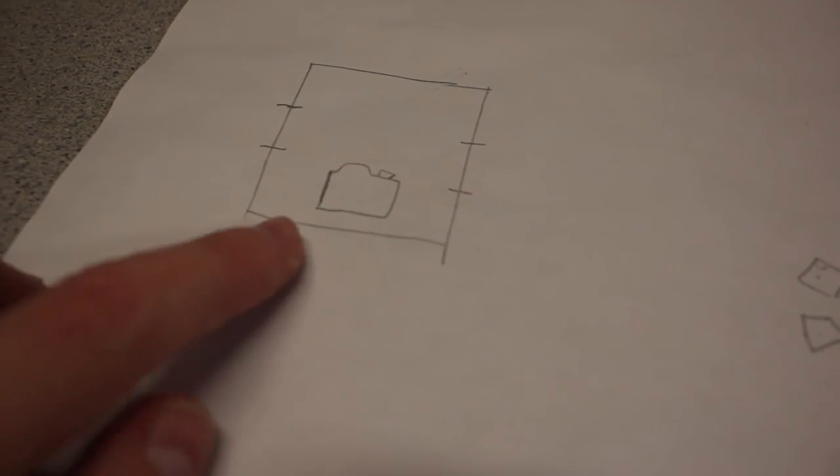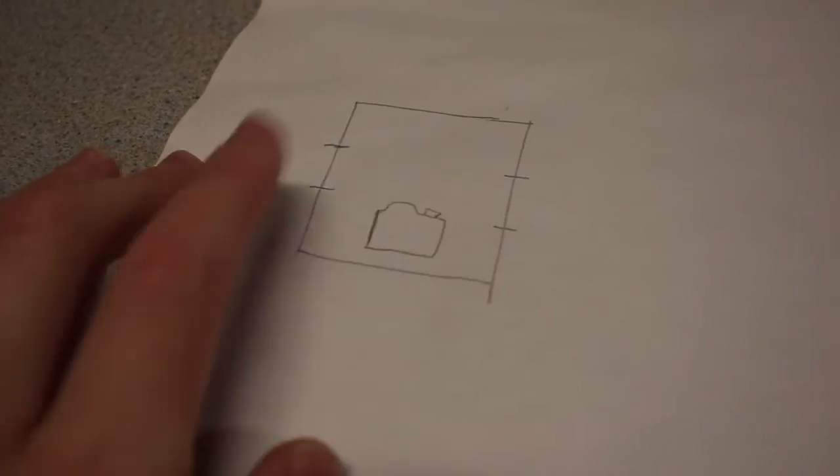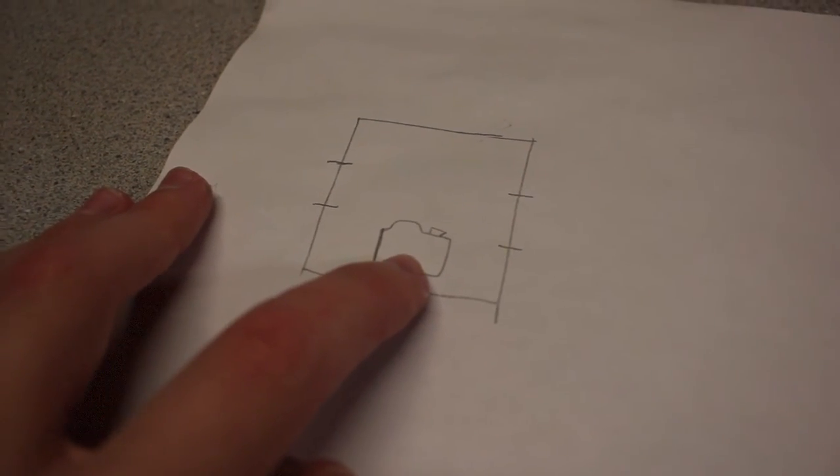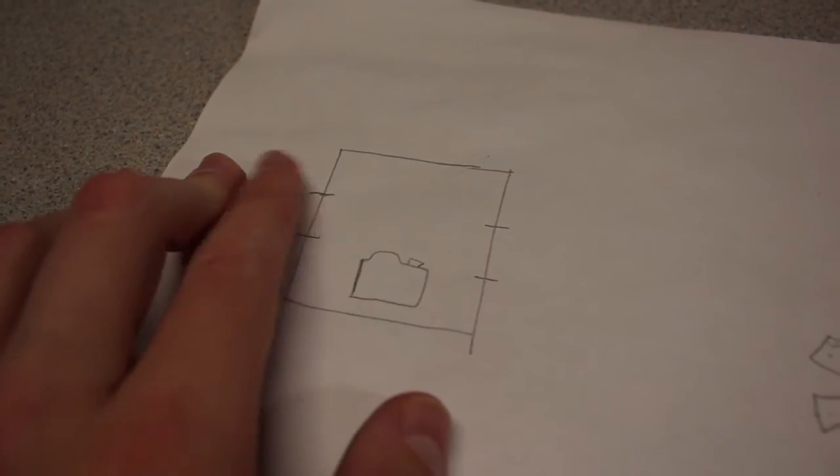So my idea with this is to just have a basic square out of PVC with handles on the left and right, camera mounted somewhere in the bottom middle, and room on the top for attachments.